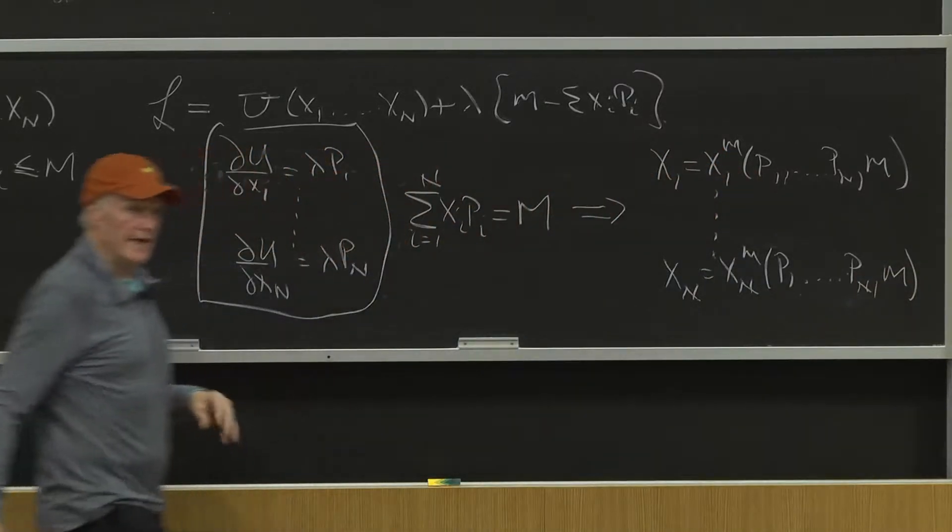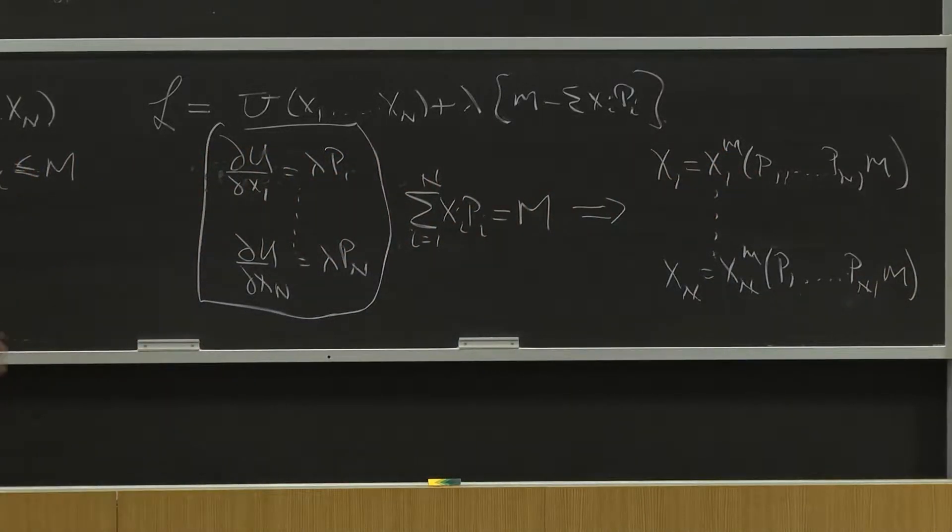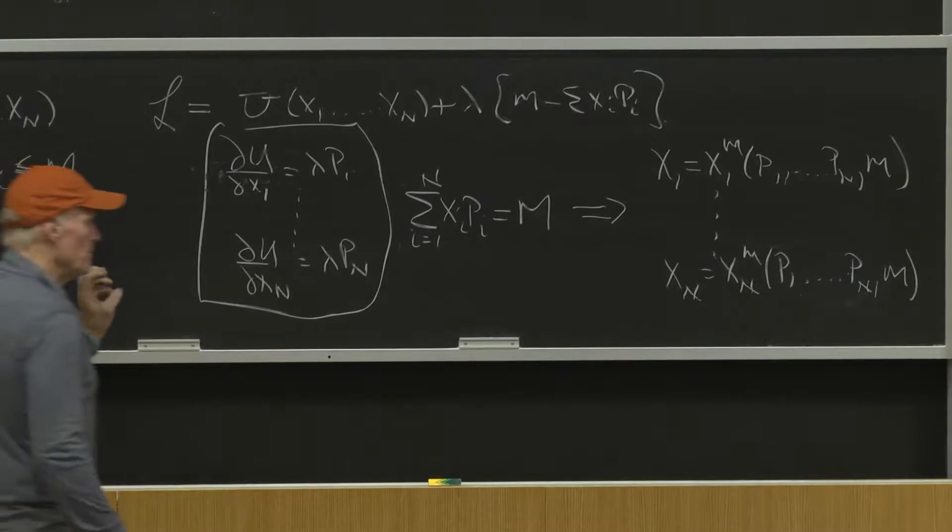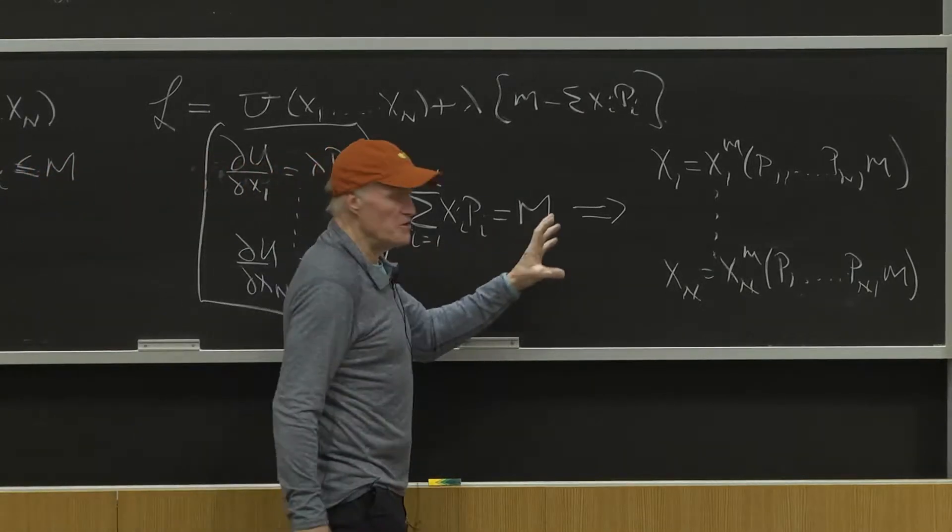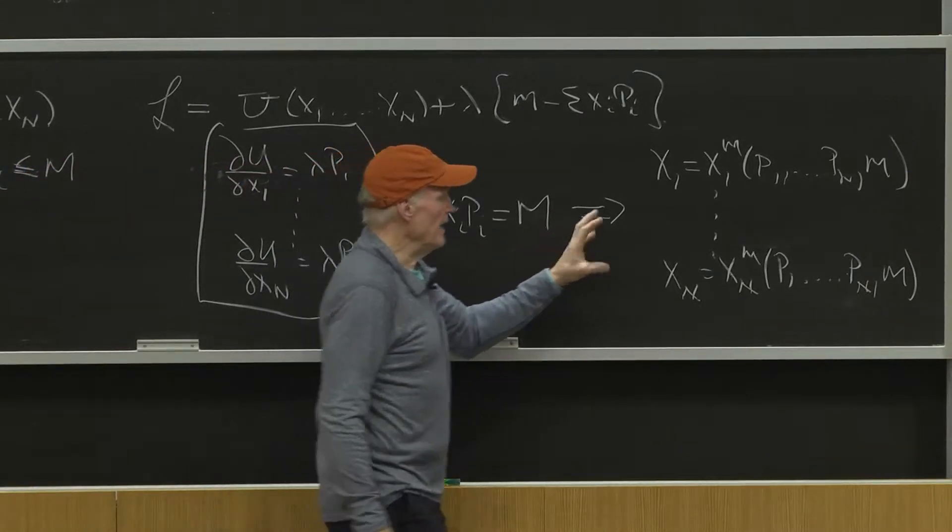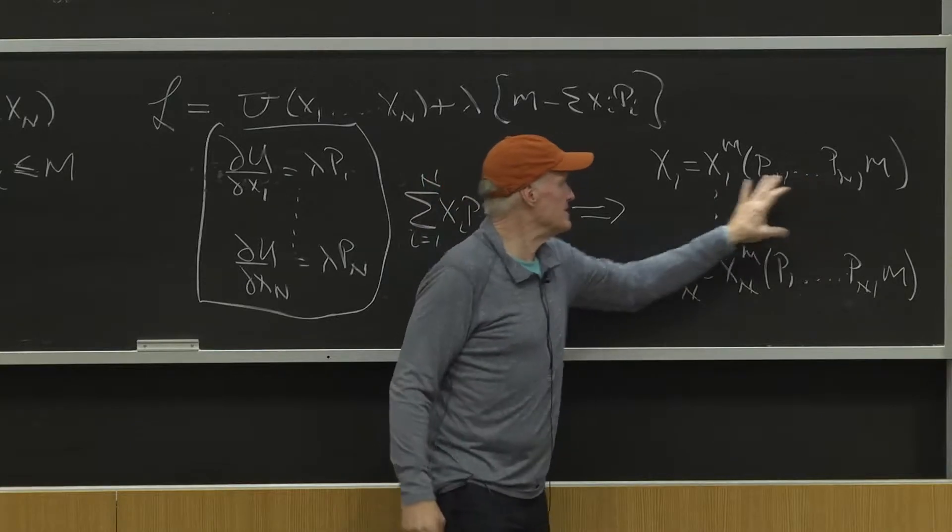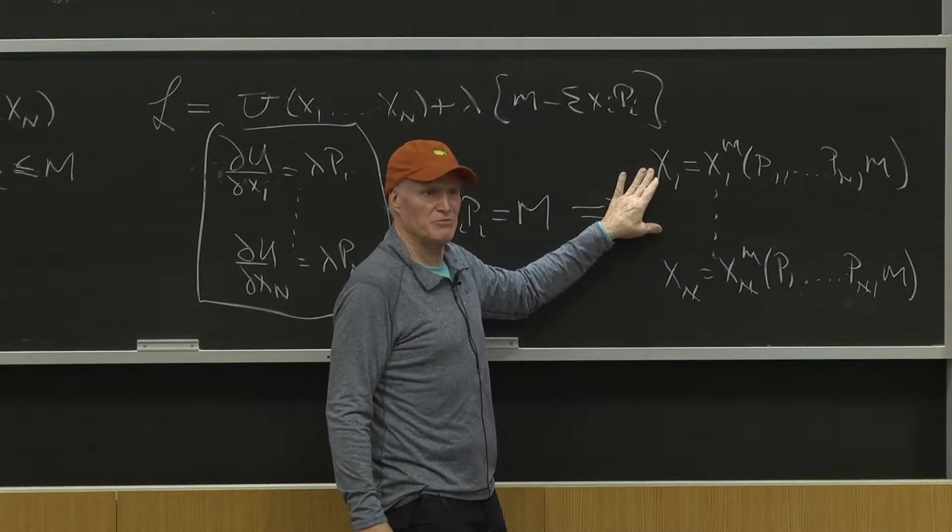OK. Now, we don't always push this notion as hard as we can. But in a strict Marshallian view of the world, one thing you'll notice is that there are no quantities in our expression for the demand for x1.